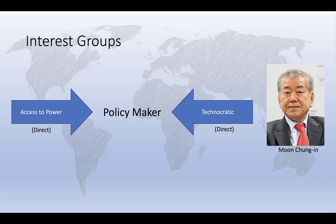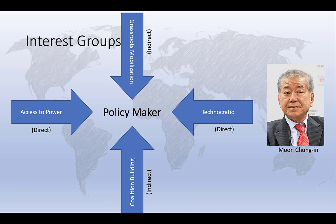But lobbyists can also attempt to influence policy makers through indirect approaches. They may, for example, attempt to develop coalitions and group alliances based on shared understandings to get issues onto the political agenda and to place pressure on government policy makers indirectly — Moon calls this the coalition building approach. And finally, they may attempt to engage in grassroots mobilization, building public support to politicize issues, affect electoral and group politics, and increase pressure on policymakers indirectly.